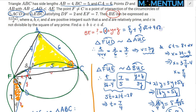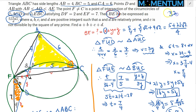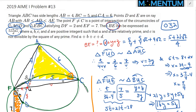Now we can compute BE = x + y + z = 5/4 + 5√2/4 + 4√2 = 5/4 + 5√2/4 + 16√2/4 = (5 + 21√2)/4. The answer is in the form (p + q√r)/s, and the problem asks for p + q + r = 5 + 21 + 2 = 28.